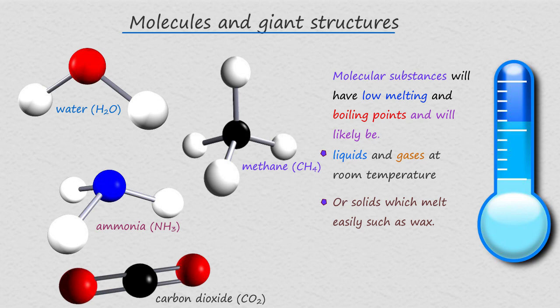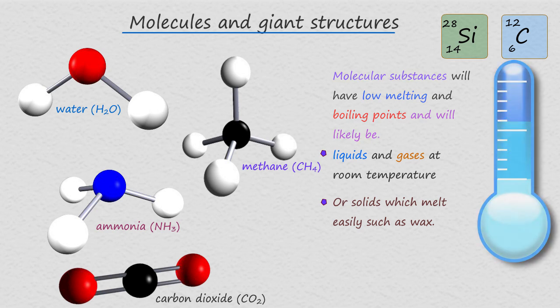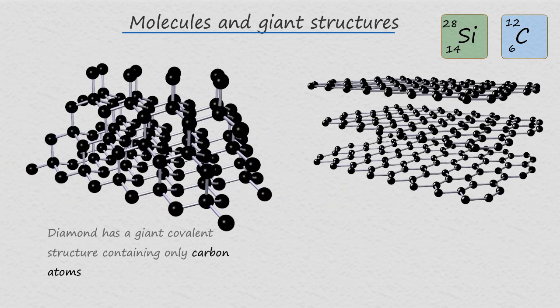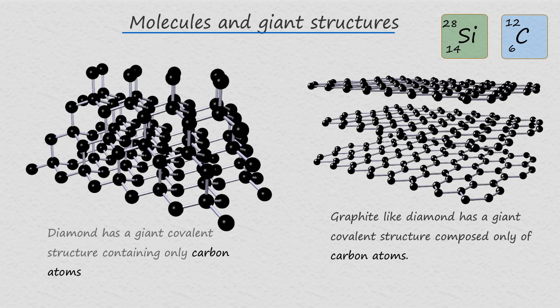However, not all covalent substances have these small molecular structures. The elements carbon and silicon in group 4 of the periodic table are able to form giant covalent structures. For example, diamond and graphite are two covalent substances made up of only the element carbon, but these substances have giant covalent structures as shown on screen.